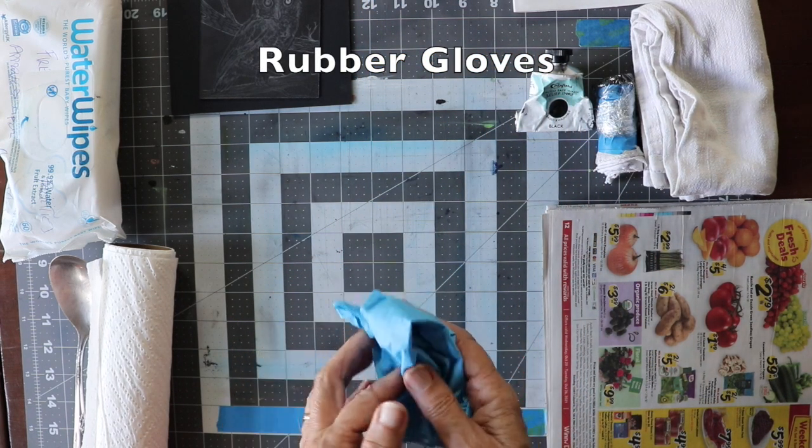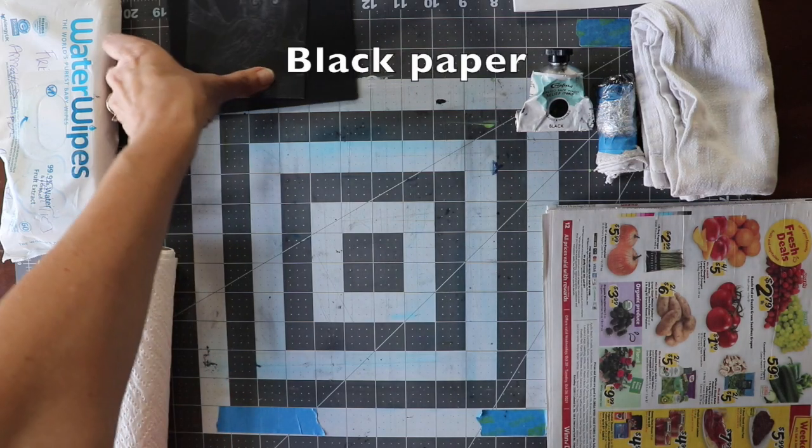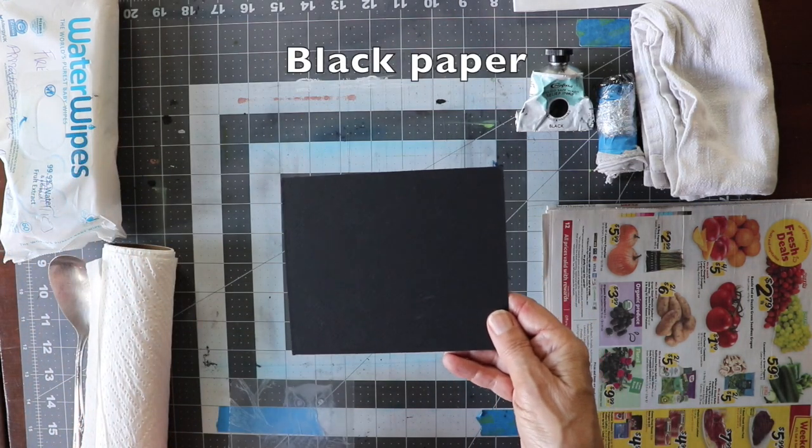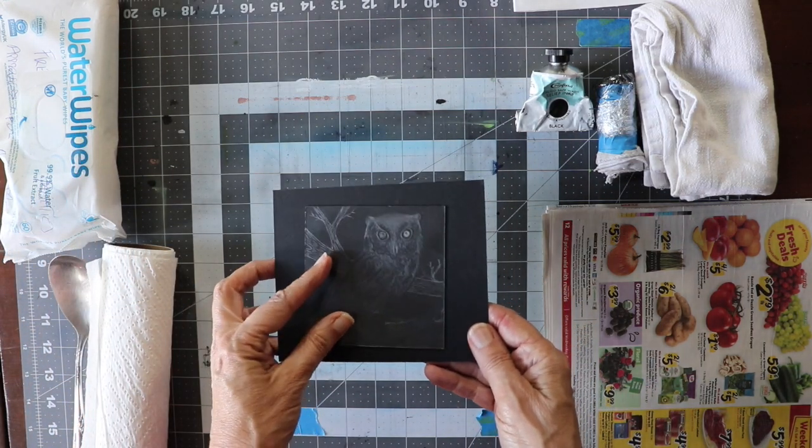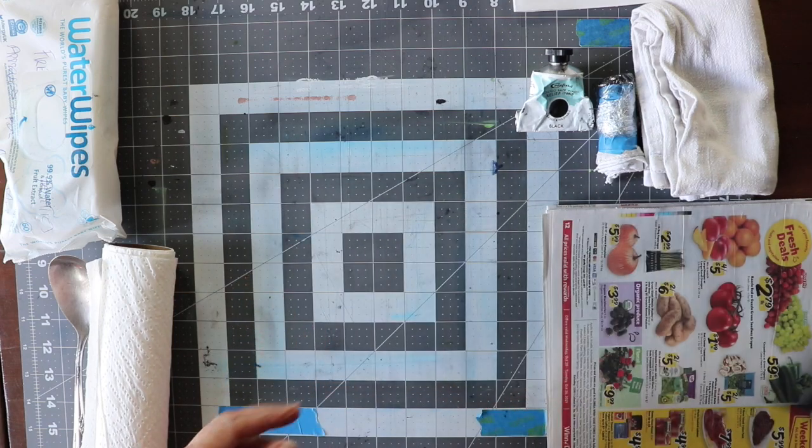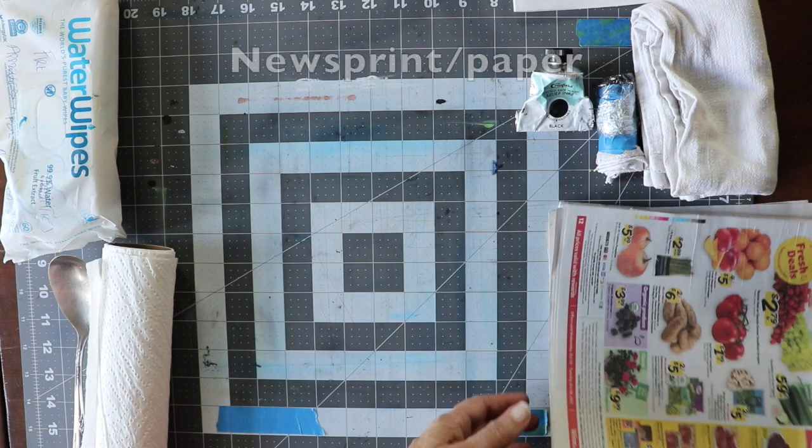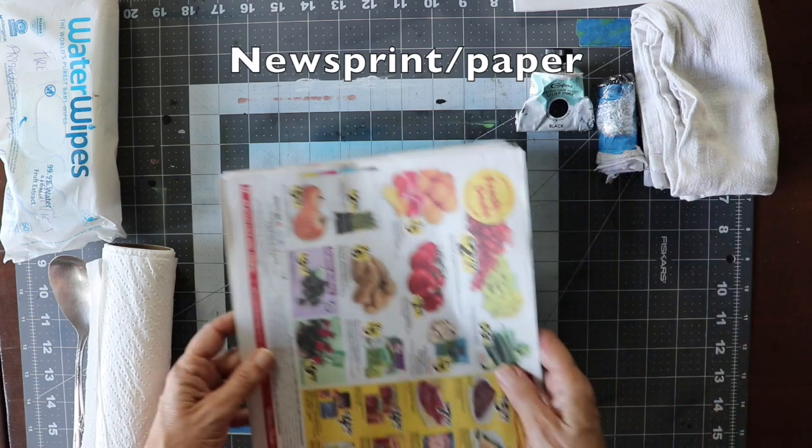Rubber gloves, a black cardboard so I could see my etched image, and old newspaper.